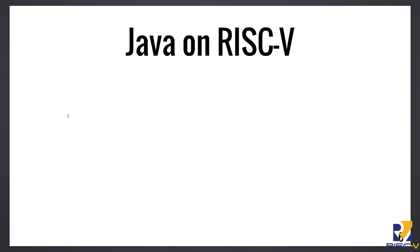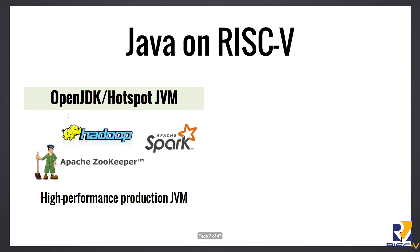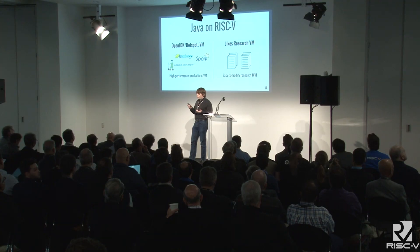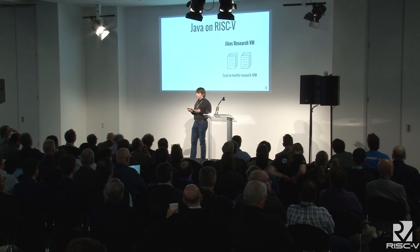I would like to focus on Java for the purpose of this talk, because Java is one of the most widely used languages in this space. If you remember my talk from about a year ago at the Swift RISC-V workshop, we currently have two ports of JVMs for RISC-V in progress. One of them is OpenJDK, which is perhaps the most widely used JVM, and the other is the JICS Research VM, which is very popular in managed language research because it's easy to modify. I will touch on Hotspot a little bit later, but for now I'd like to focus on the JICS RVM.